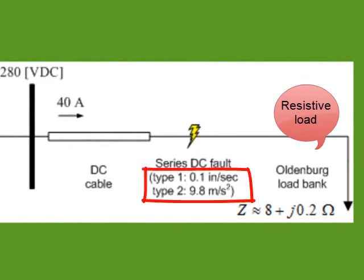The two types of faults are staged. The first consists of two electrodes that separate at a constant rate of 0.1 inches per second. The second fault type consists of two electrodes accelerated apart at the rate of gravity.